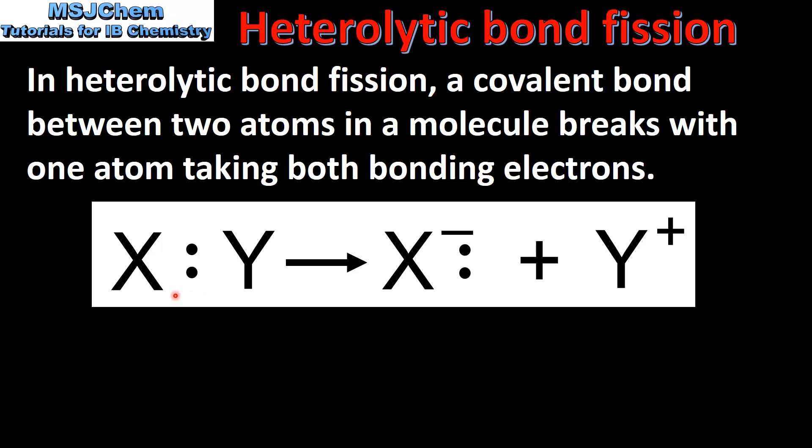So once again we have two atoms X and Y which are bonded by a single covalent bond. In heterolytic bond fission this bond breaks with one atom, in this case X, taking both the bonding electrons.